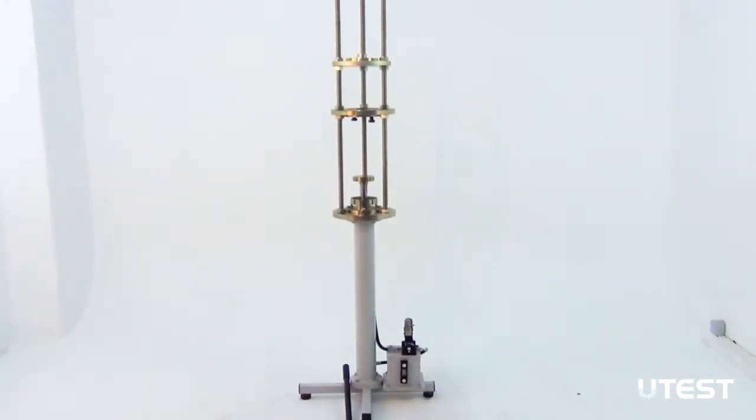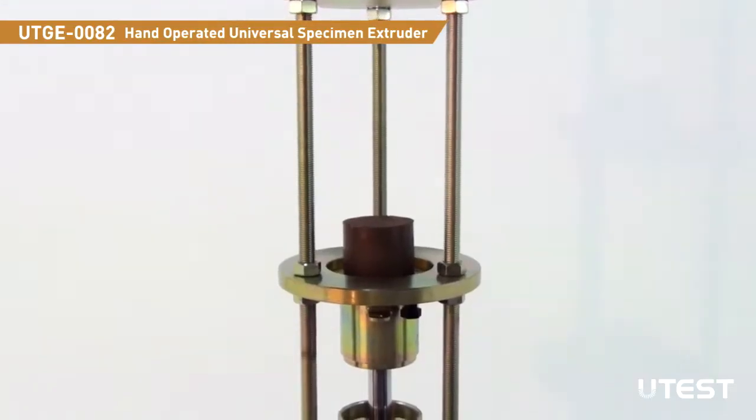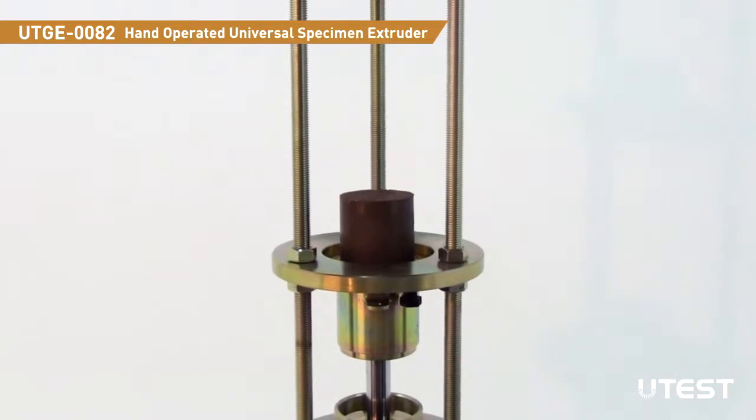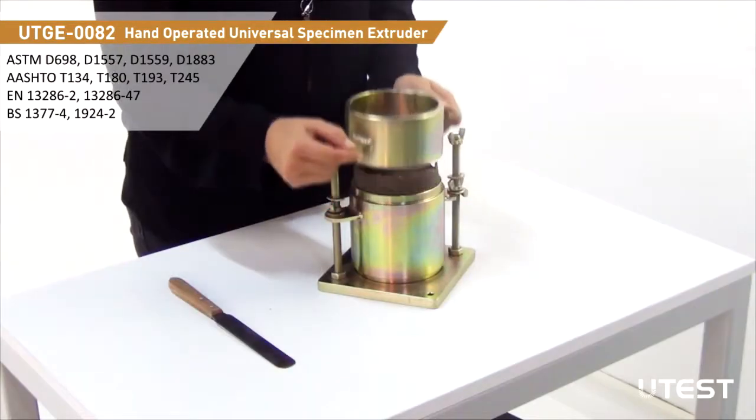UTEST UTGE-0082 is a compact, multipurpose, hand-operated hydraulic specimen extruder which is designed for the extrusion of samples from Marshall, CBR and Proctor molds.